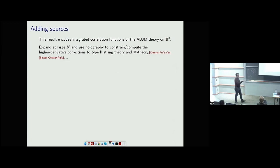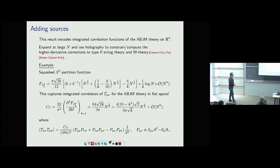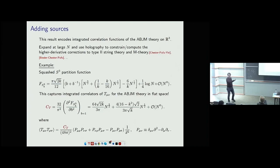The simplest thing you can extract from this answer is the two-point function of the energy-momentum tensor to all orders in N. You take this squashed sphere partition function — which we have to all orders at large N — differentiate with respect to the squashing, and that gives an integrated two-point function of the energy-momentum tensor. From this you can extract the number c_T, which is the only dynamical information in the two-point function.